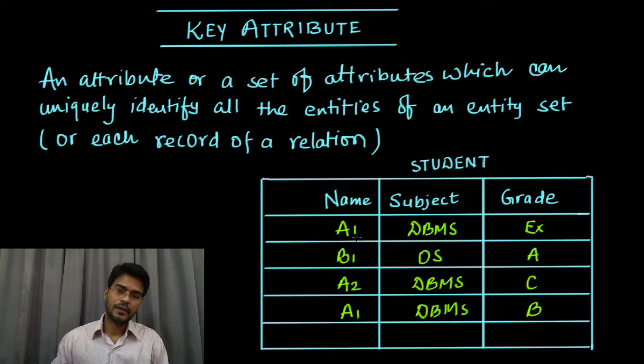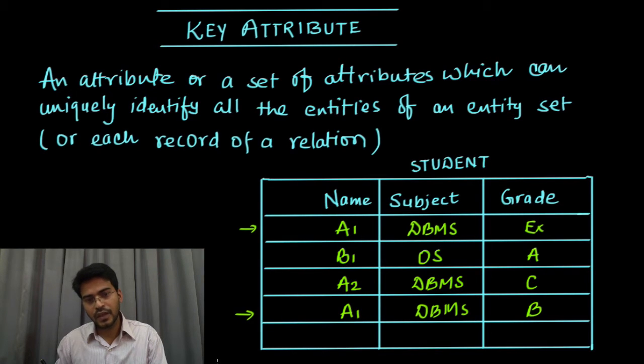Now with the help of A1 or by the name, I cannot identify unique record. When I use the name as a key and try to find out, we have conflict as we have two names with A1.